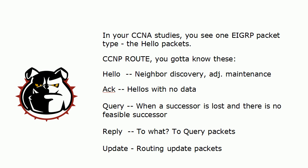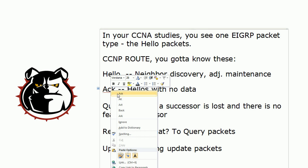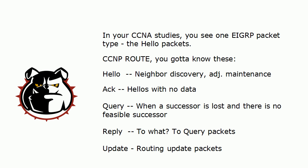What you might not know are these other packet types. ACK packets are hello packets that simply don't have any data in them — strictly an acknowledgement. A query packet is sent when a successor is lost and there is no feasible successor; these are also known as DUAL query packets. A reply packet is what we send in answer to a query packet, hopefully containing a route.